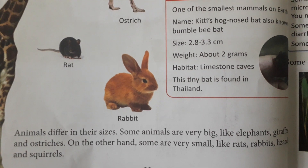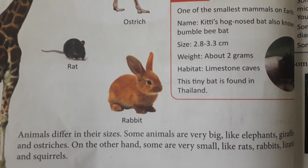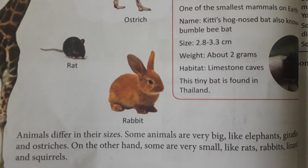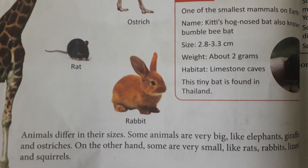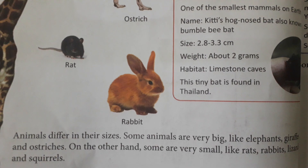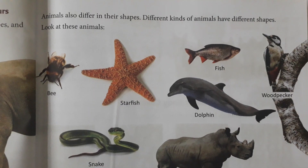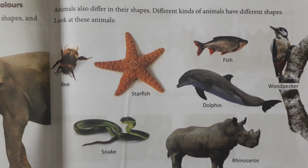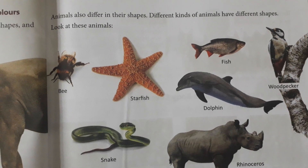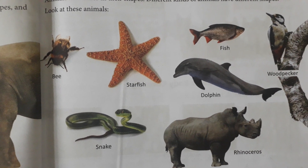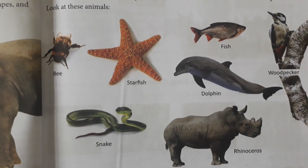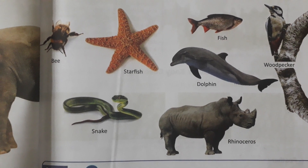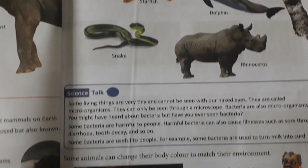All animals are of different shapes, different sizes, and different colors. Big animals include elephant, giraffe, horse, and ostrich, while small animals include lizard, rat, and rabbit. Animals also differ in shape. Look at these animals - bee, starfish, dolphin, fish, woodpecker, rhinoceros, and snake. In sabhi ki shape bilkul hi alag hai - all of these have completely different shapes.